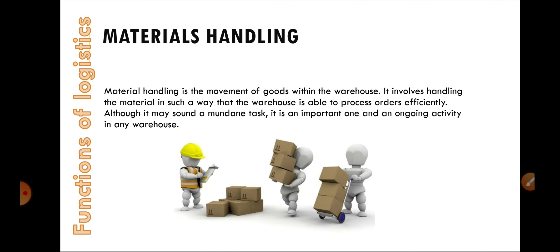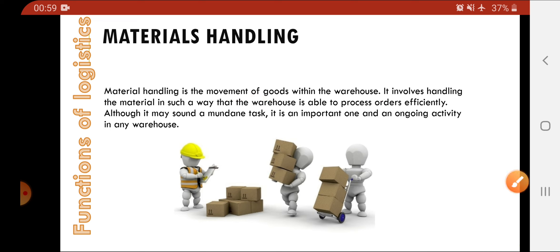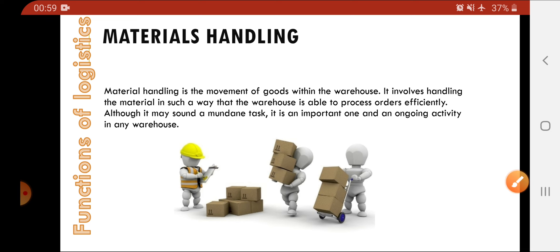Moving on to material handling. In material handling, you have to check the movement of goods within the warehouse. It involves handling material in such a way that the warehouse is able to process orders efficiently. You have to place products at the right place so that whenever there is an order, you can easily fetch that product in less time.